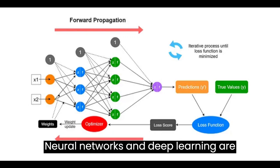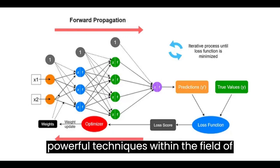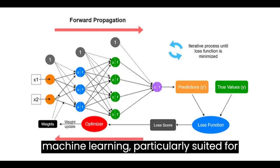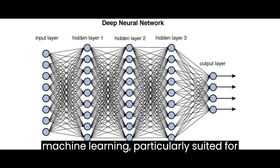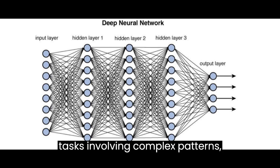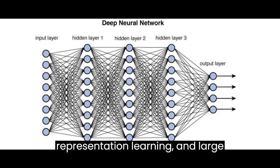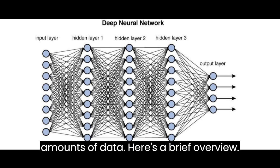Neural networks and deep learning are powerful techniques within the field of machine learning, particularly suited for tasks involving complex patterns, representation learning, and large amounts of data. Here's a brief overview.